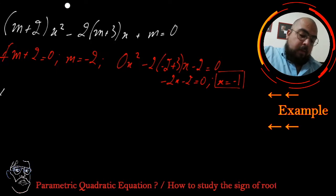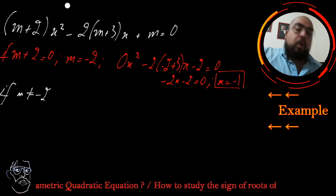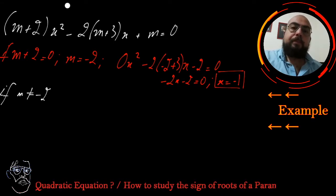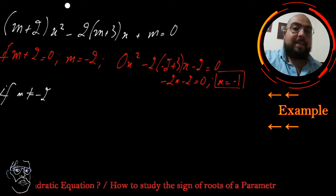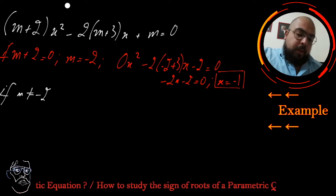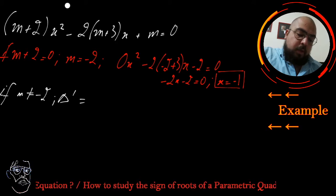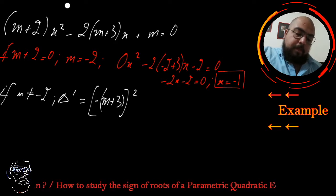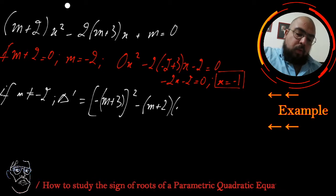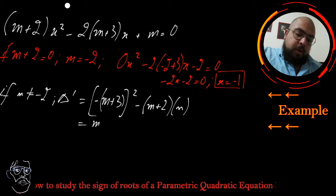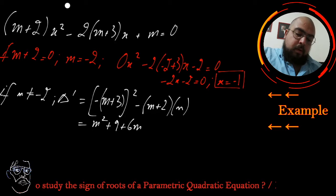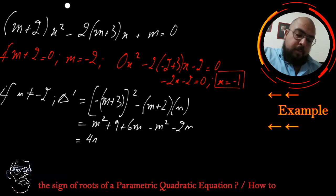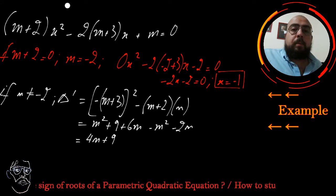In the following part, I'm going to take only m ≠ -2, which means my equation remains a quadratic equation. I will have to go through delta and then discuss the existence of roots plus the sign of its roots. I'm going to use delta prime. Delta prime equals (-（m+3))² - a·c, where a = m+2 and c = m, which gives m² + 9 + 6m - m² - 2m. So delta prime equals 4m + 9.